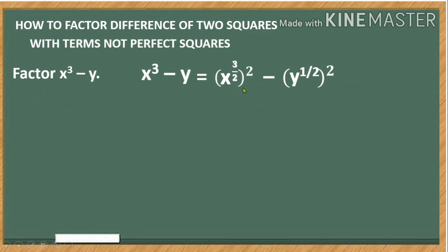Our base here is x raised to the power of 3 over 2, and we have y raised to the power of 1 over 2. So what we are going to do is we copy the base in each term.